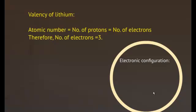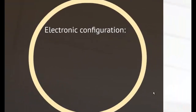Let us find out the electronic configuration of lithium. According to Aufbau principle, the electrons tend to occupy the available orbitals of minimum energy in the ground state of an atom.